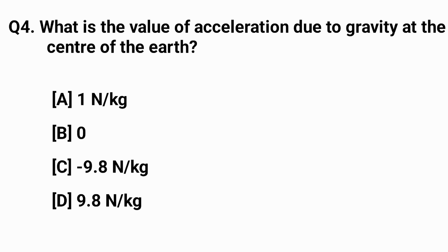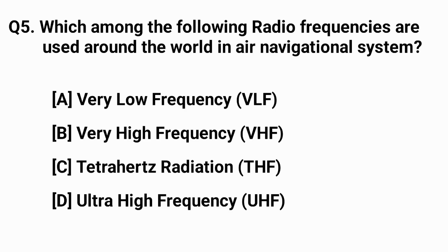Question number four: what is the value of acceleration due to gravity at the center of the earth? The right answer is option B — zero. Question number five: which among the following radio frequencies are used around the world in air navigational systems? The right answer is option B — very high frequency.